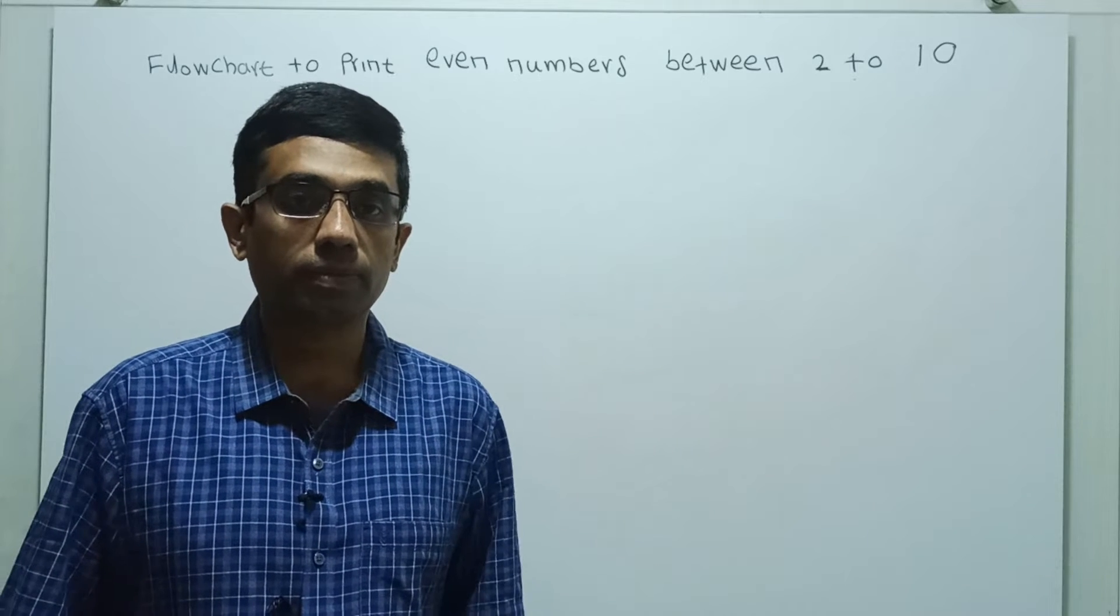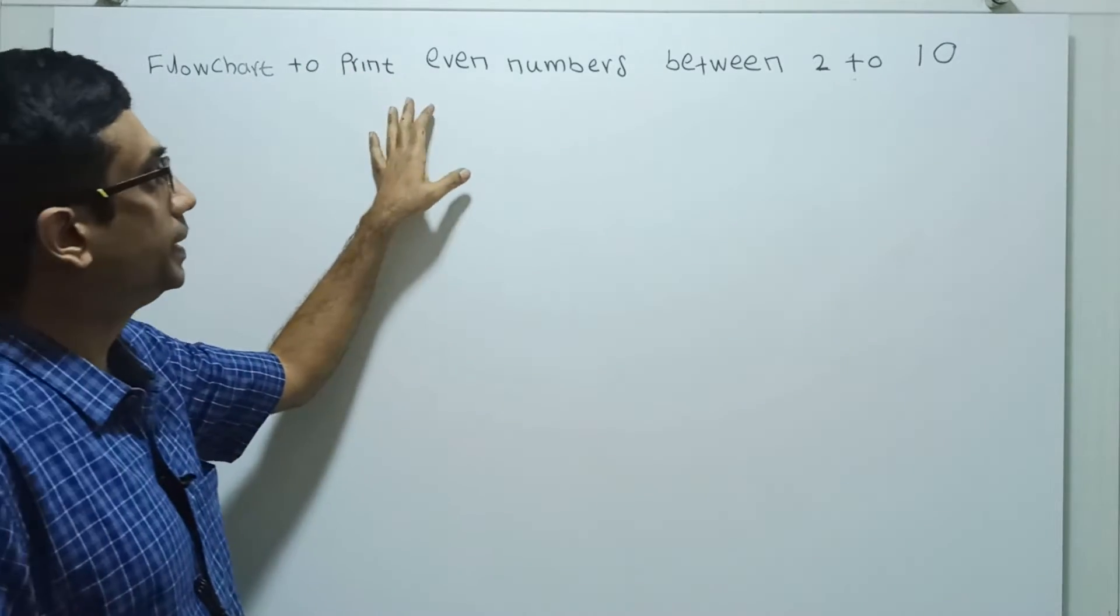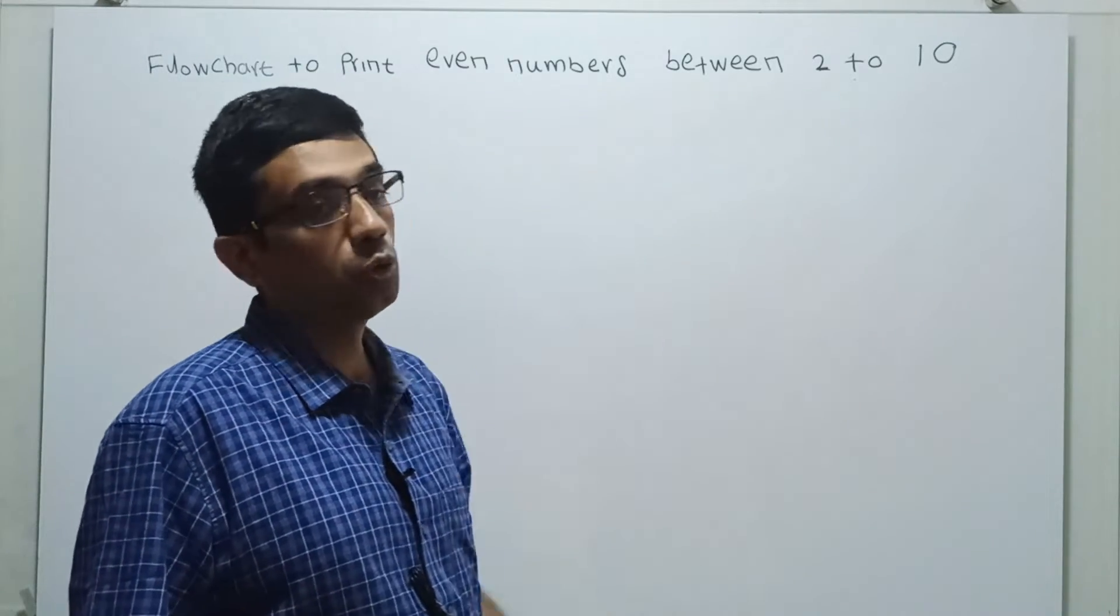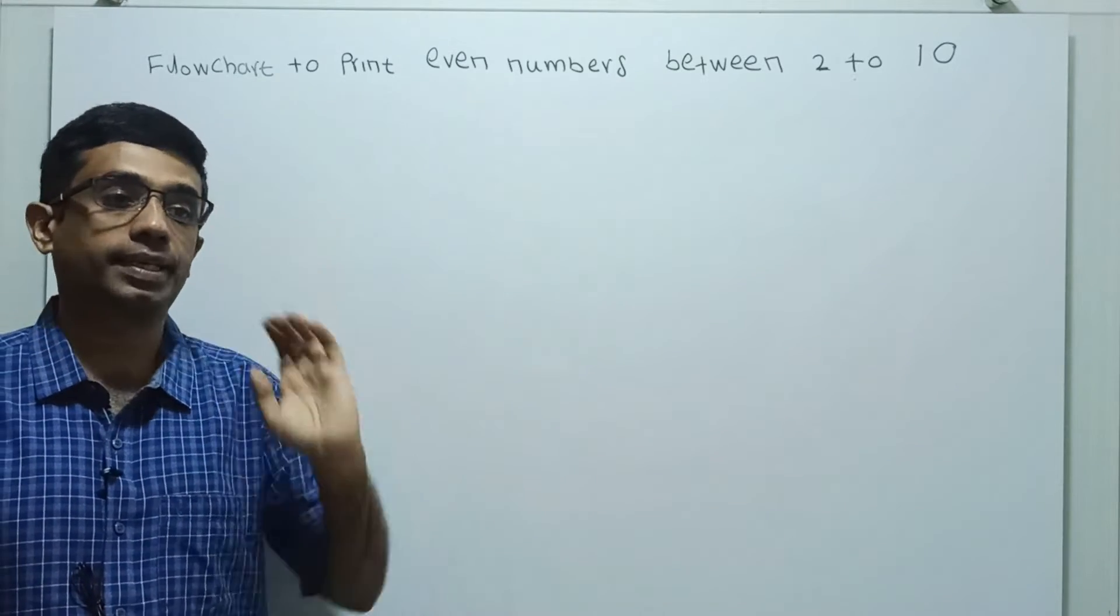Hello friends, we are going to draw a flowchart to print even numbers between 2 to 10, that means 2, 4, 6, 8 and 10.